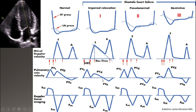The same pattern changes occur in pulmonary vein Doppler. In the early stage of diastolic dysfunction — impaired relaxation — since blood flow at early diastole (E) decreases, blood flow from the pulmonary vein to the left atrium decreases too. This corresponds to the D wave: we will see D become shorter.